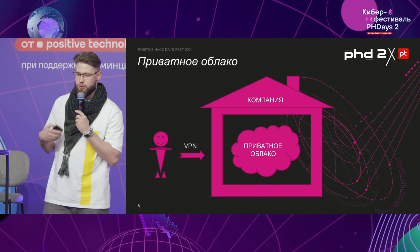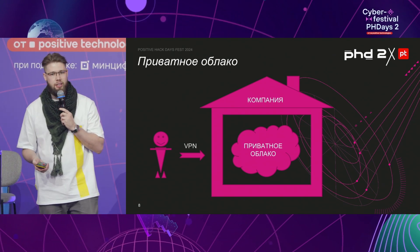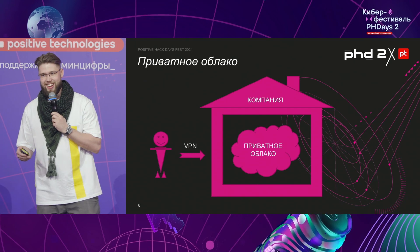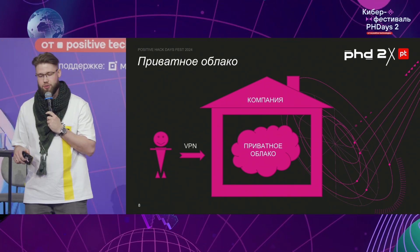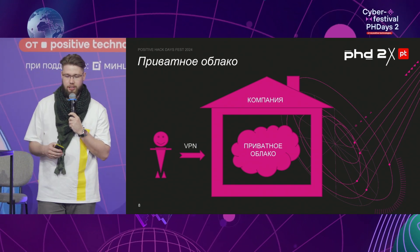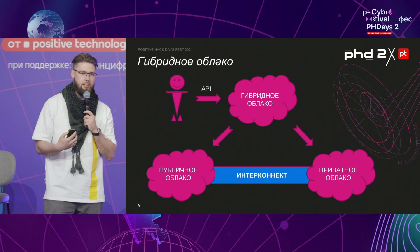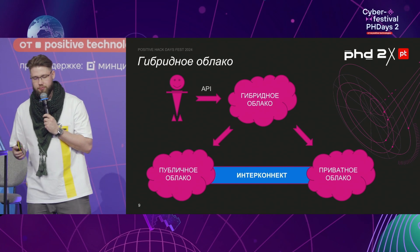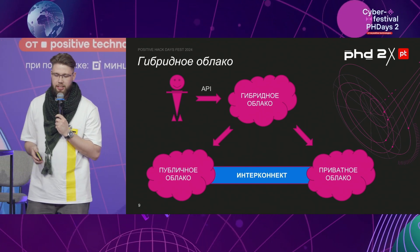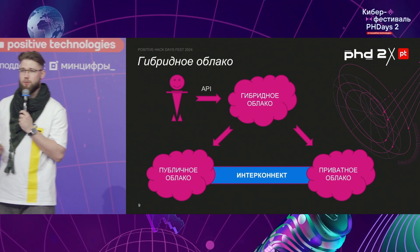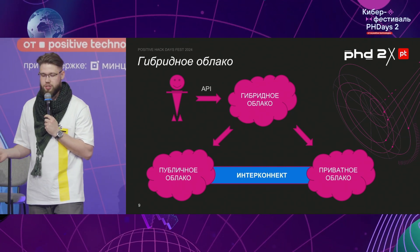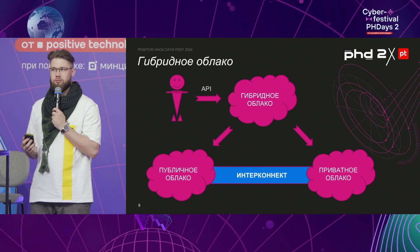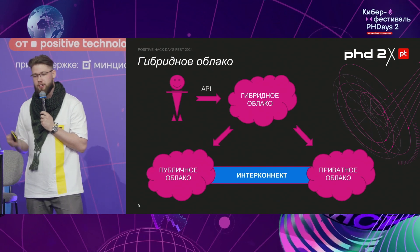The private cloud is the opposite of the public cloud. If you want to get connected to a private cloud from your home, you will need a VPN. The private cloud is deployed internally, and you can get access to it from inside the company. It's not always that you have enough computing power in your company, or that more advanced services are available in the public cloud.